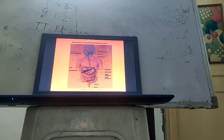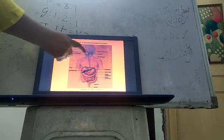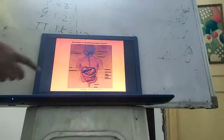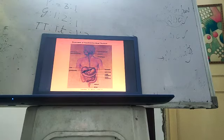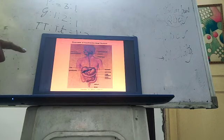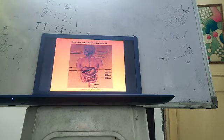Digestive system starts from your mouth. This is your mouth and this is your buccal cavity. Then after buccal cavity there is pharynx that is a common passage for food and air. Then larynx which is known as voice box.